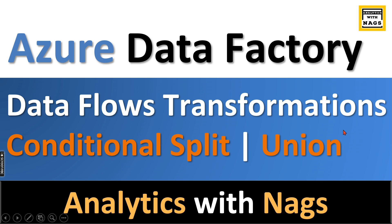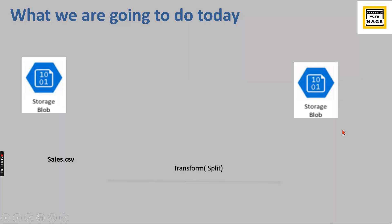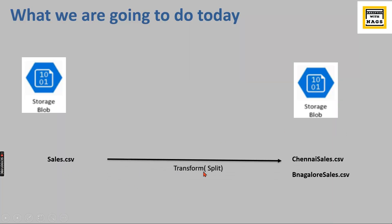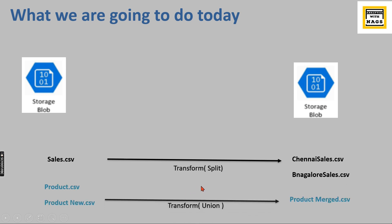Without further delay, let's begin. We have sales data and a conditional split. This data contains a complete set with different locations, and the requirement is to split the data into two different files. The other transformation we are going to do is the opposite — combining data.